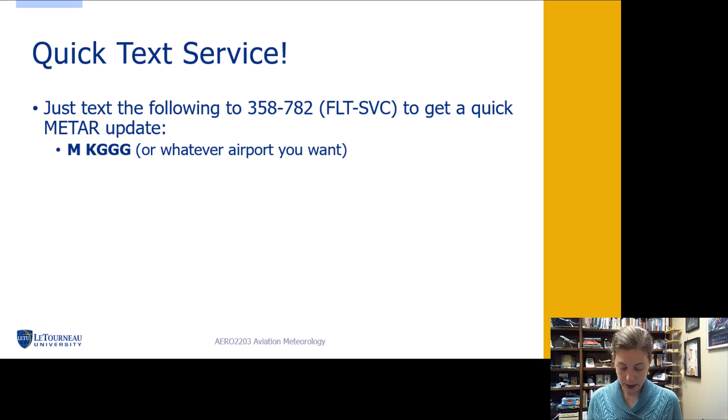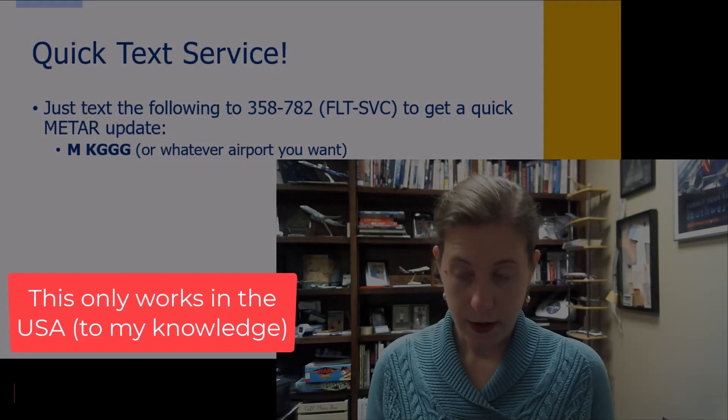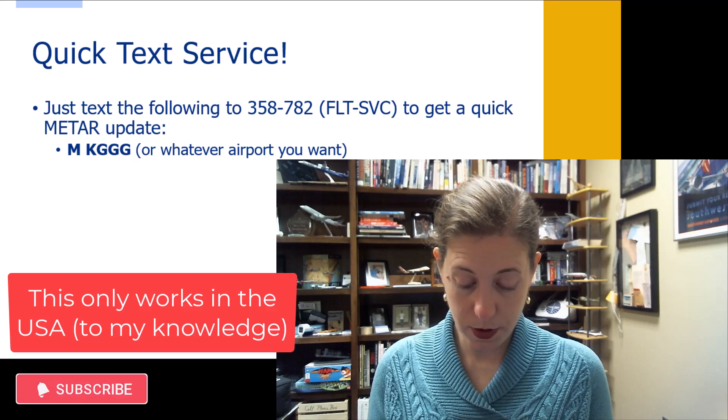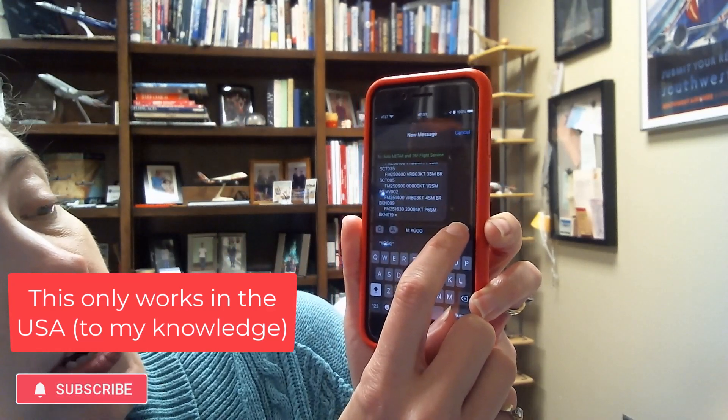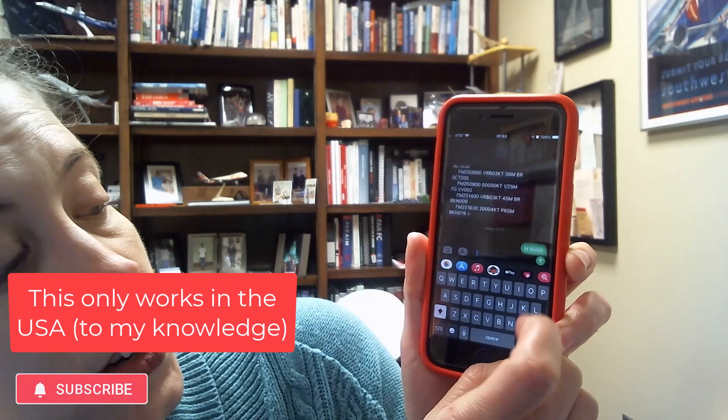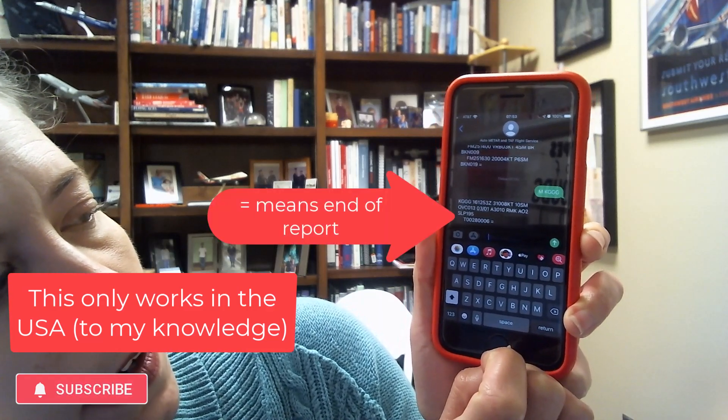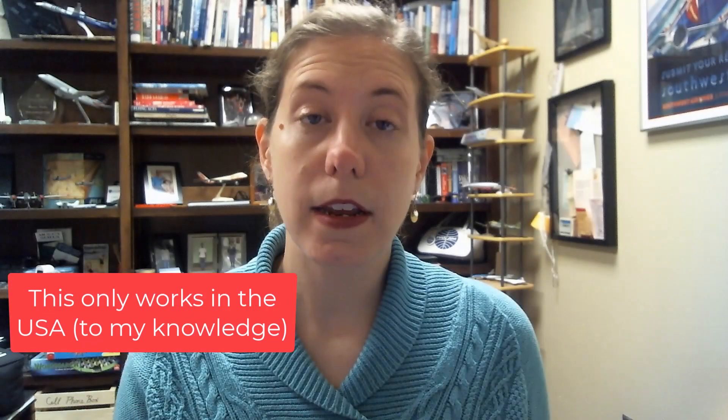Three, five, eight, seven, eight, two. If I text to this, let's see, let's just type my home airport and I'm going to text it to GGG, M space KGGG. Send that in. It'll work. And there is my METAR for East Texas Regional Airport studying about METARs. You can do it. Learn to decode them and it will serve you very well.